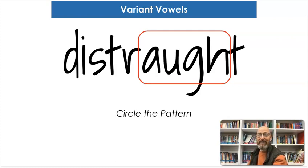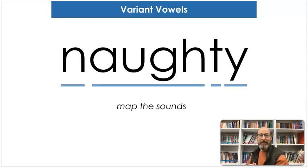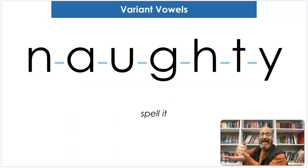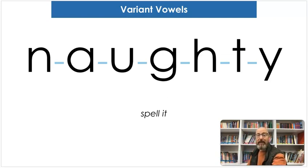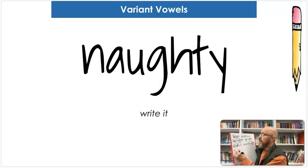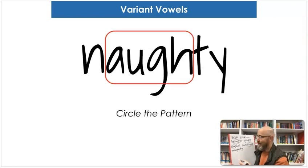Our next word is naughty. Say naughty. You know what naughty means? Not behaving. Map the sounds: N-A-U-G-H-T-Y. Naughty. And let's write it: N-A-U-G-H-T-Y. What makes the "aw" sound? A-U-G-H. That's correct. Circle it.